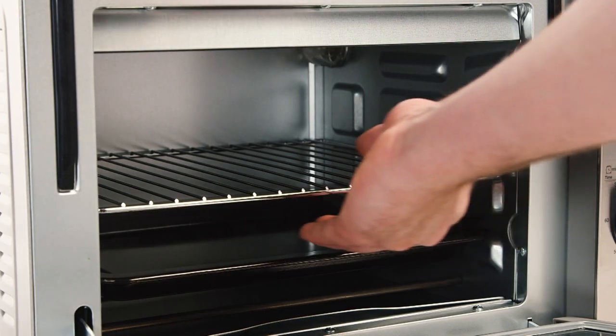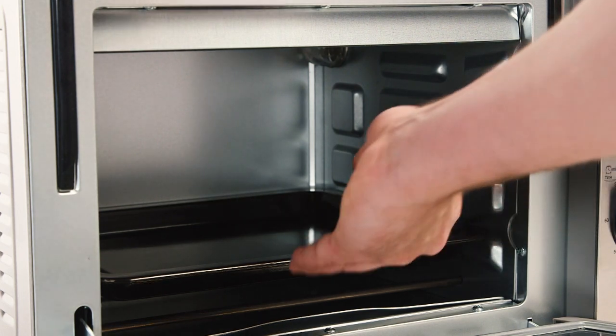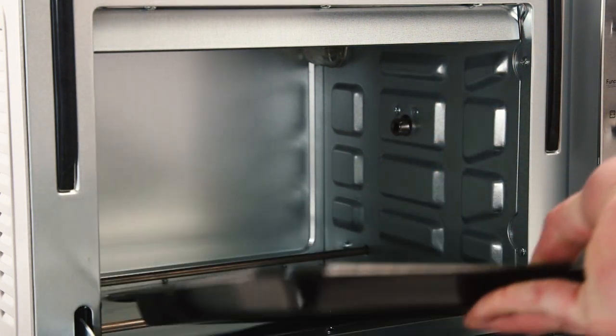To use the rotisserie spit, remove the grill and baking tray. Insert the rotisserie spit through the center of the joint or chicken.